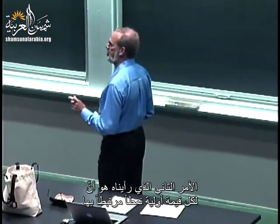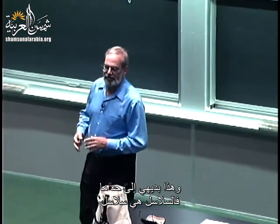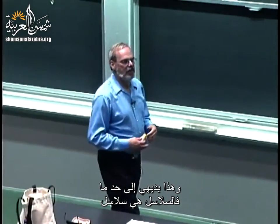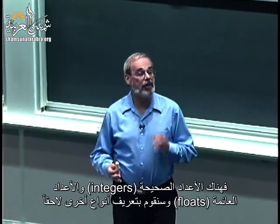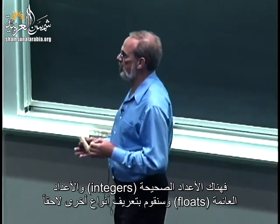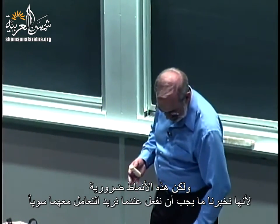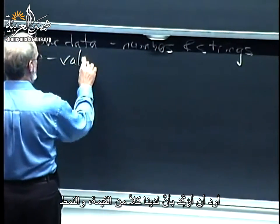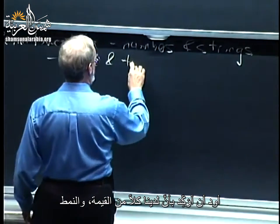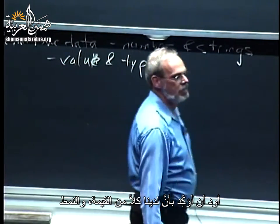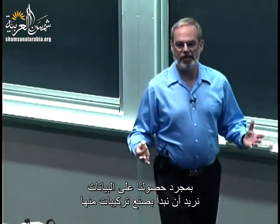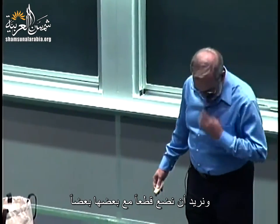Associated with every primitive value is a type. Strings are strings. For numbers, we have integers, floats, and we'll introduce a few more as we go along. Those types are important because they tell us something about what we want to do when we put values together. We have both a value and a type. Once we have them, we want to start making combinations — we combine things in expressions, formed of operands and operators.